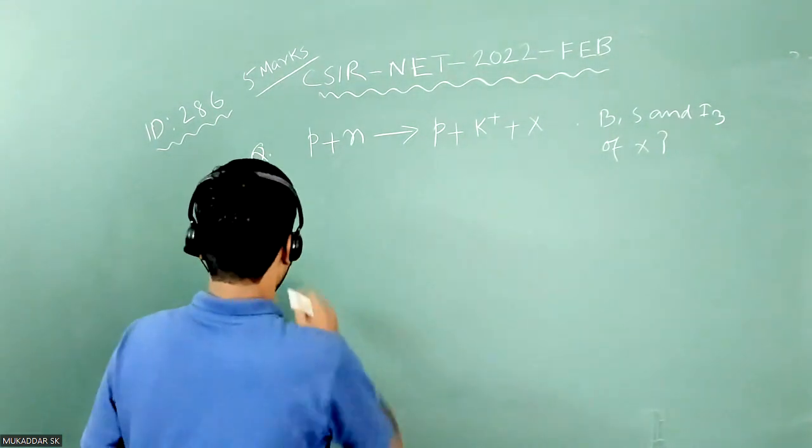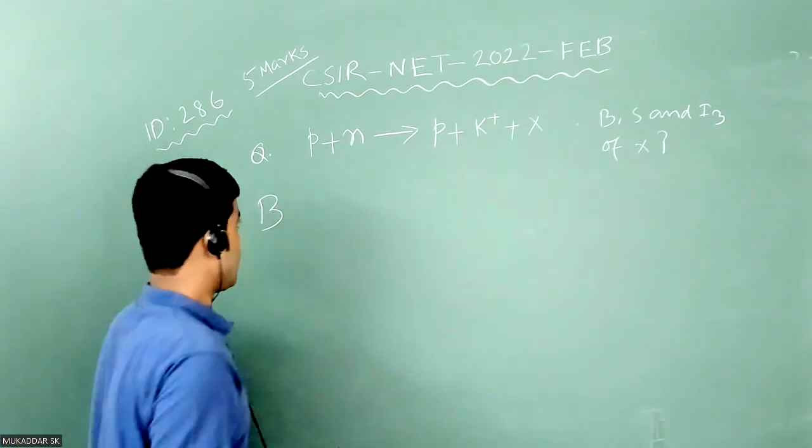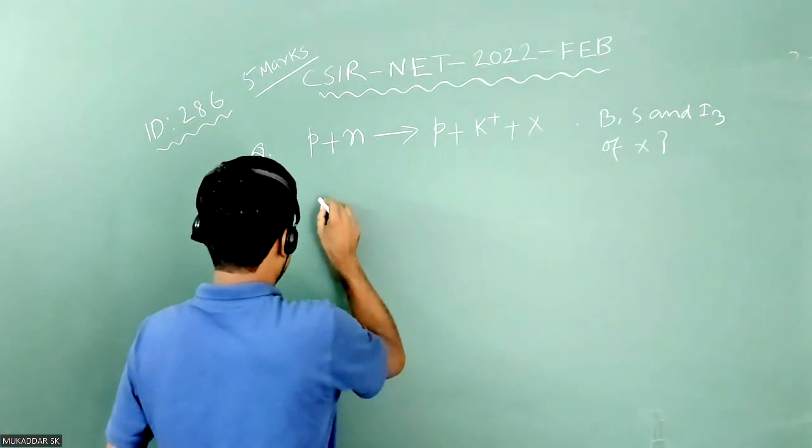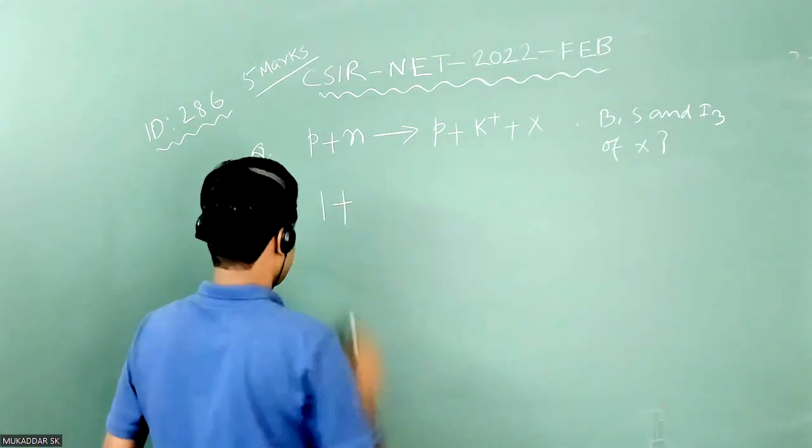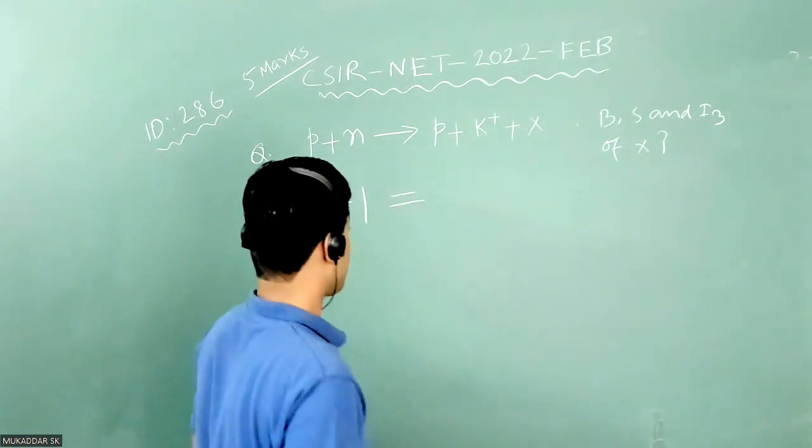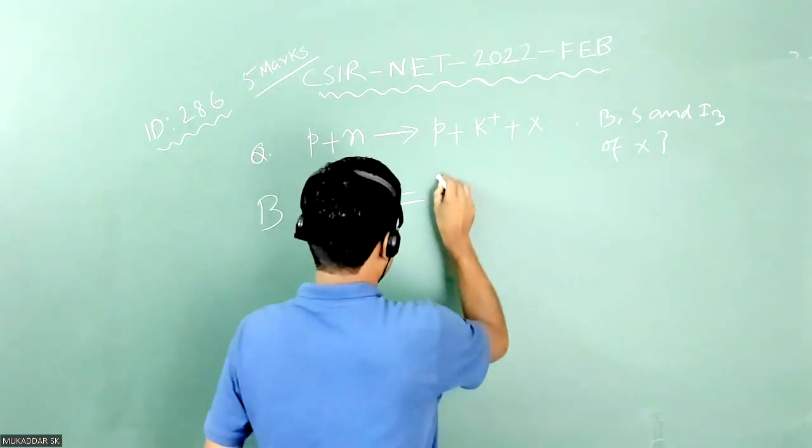So let's check baryon conservation. As you know that proton is baryon, so that baryon number is one. Again, same is true for neutron. On the right hand side you have proton again, so B quantum number will be one.